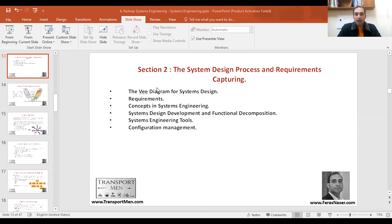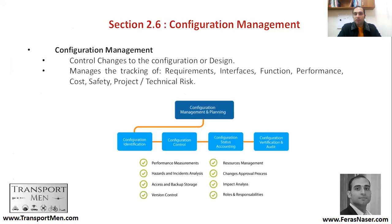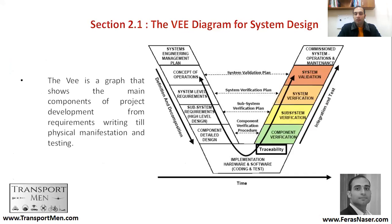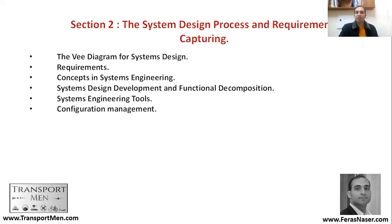This is the chapter content. We will be discussing the following topics: the V-diagram and how important it is for systems design; requirements — what is a requirement and how we collect requirements from different stakeholders; reliability concepts in systems engineering; system design and functional decomposition; systems engineering tools that are available; and configuration management.